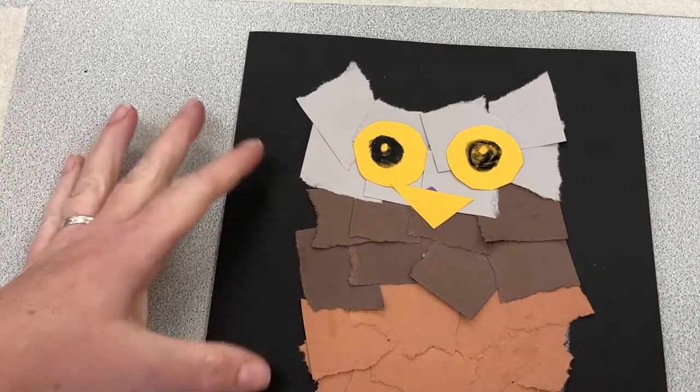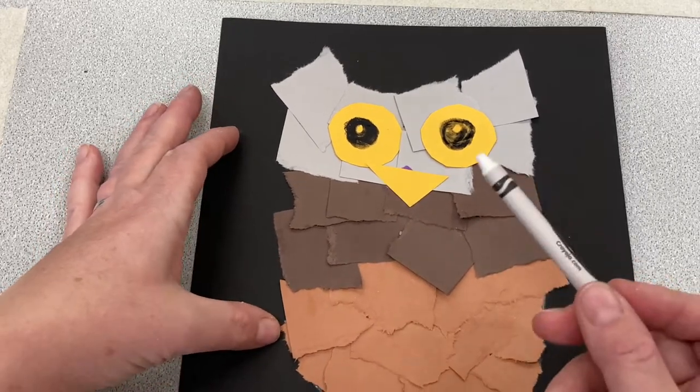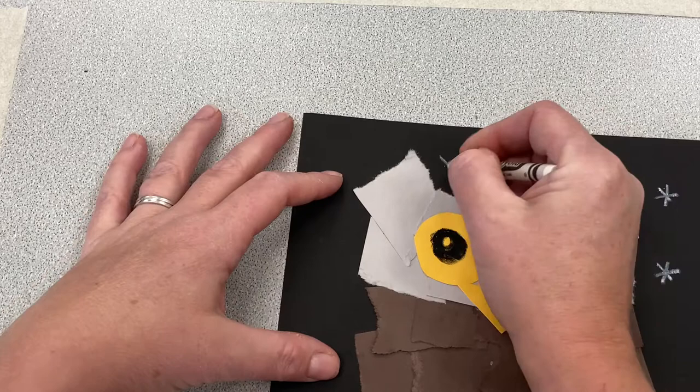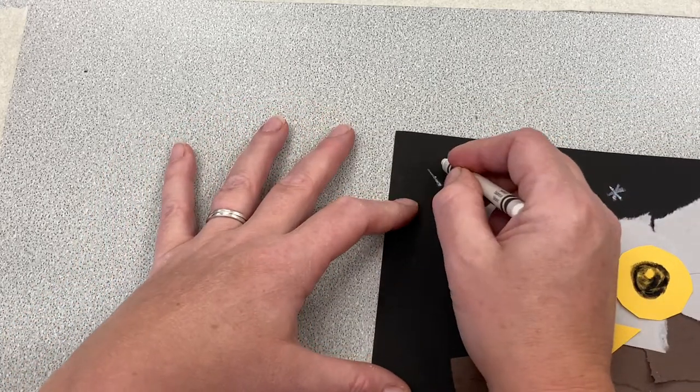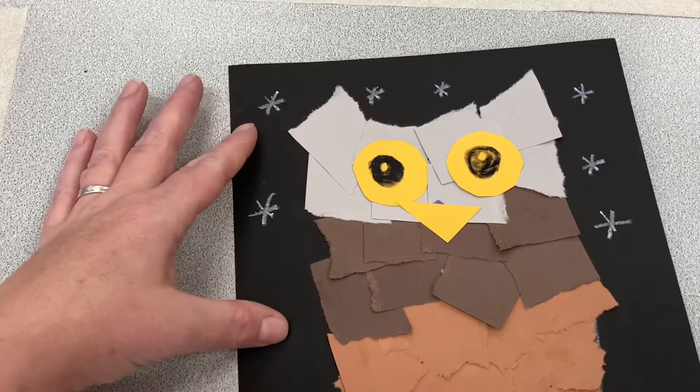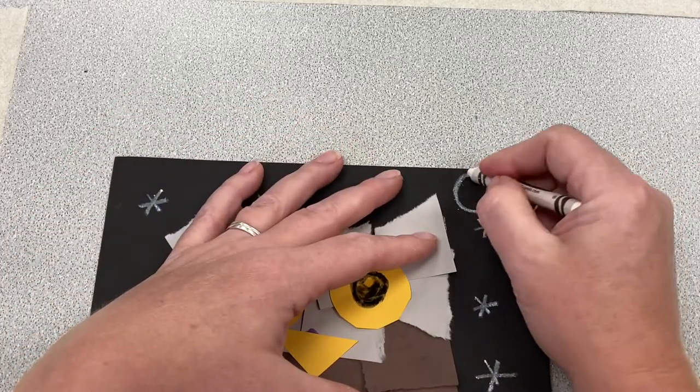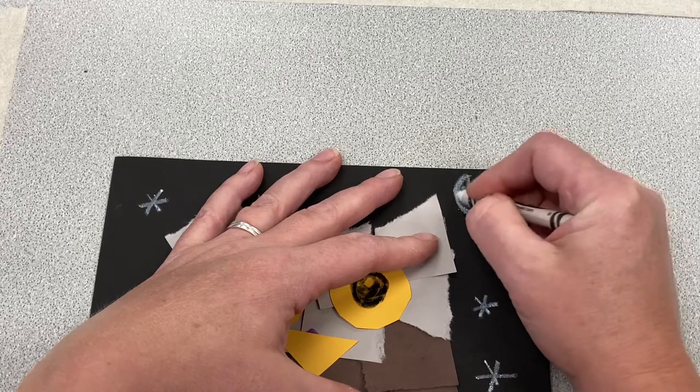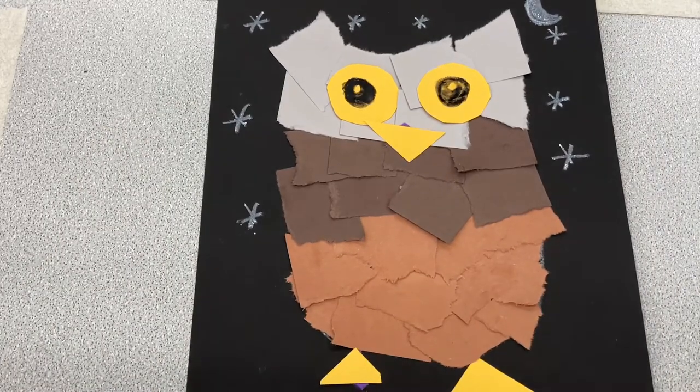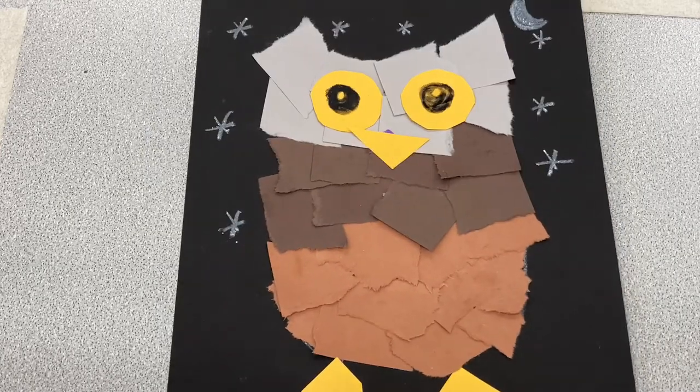In art, this little spot is called a highlight. Okay. Now, I think I'll make it look like nighttime in my picture by using the white. So maybe some little stars. To make a star, I just make a little X and then put a line through it. X with a line. X with a line. X with a line. Oh, maybe I'll make a little crescent moon here in the sky. Like the letter C and just fill it in. More stars. And if I have time, I could keep adding other details. But there we have our owl collage.